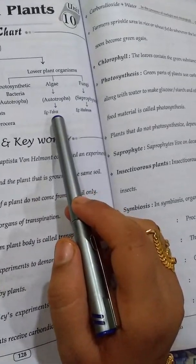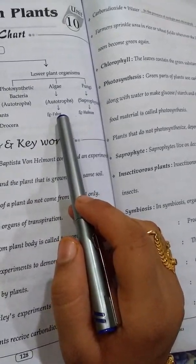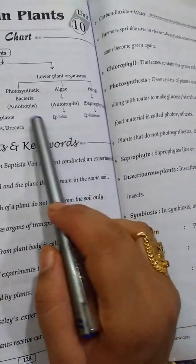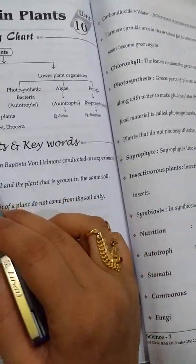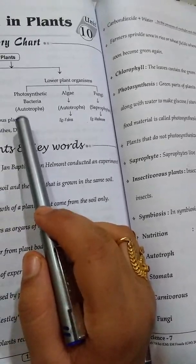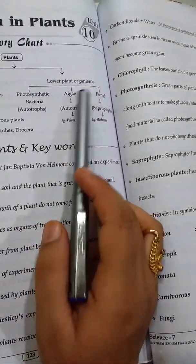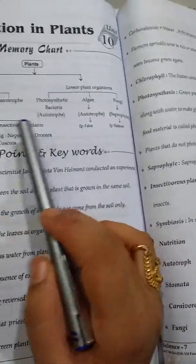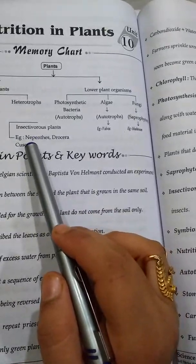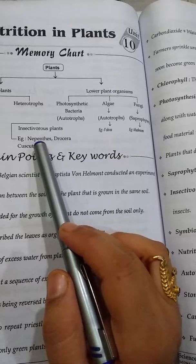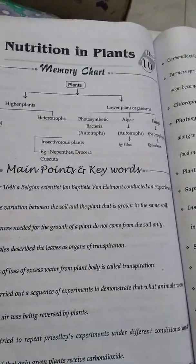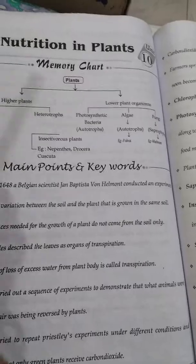Autotrophic plants include algae like Volvox. Another category is insectivorous plants, which are also lower organisms present in plants. Examples of insectivorous plants include Nepenthes, Drosera, and Cuscuta.